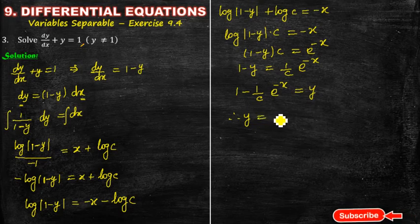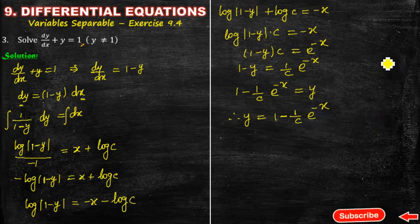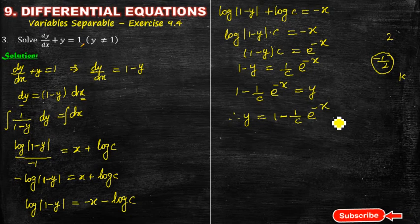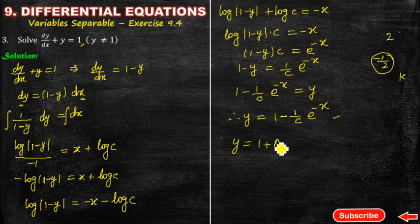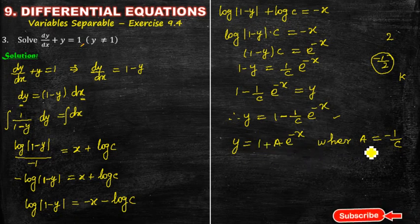So y is equal to 1 minus 1/c times e to the power minus x. Since 1/c is already a constant, we can replace it. Let a equal minus 1/c, which is also a constant. Therefore, y is equal to 1 plus a times e to the power minus x. That is the answer.